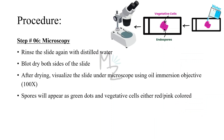Step six, the last step: we'll rinse the slide again with distilled water and blot dry both sides of the slide. Blot dry means to gently remove excess moisture or liquid from a surface using an absorbent material like a paper towel. After drying, we'll visualize the slide under the microscope using the oil immersion objective at 100x magnification. Spores will appear as green dots, and vegetative cells will appear either red or pink colored.